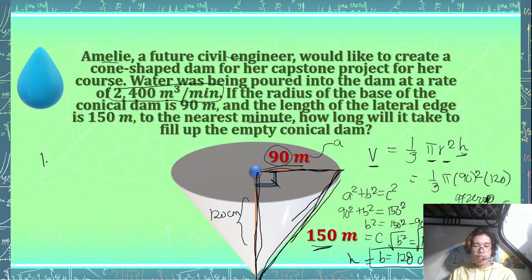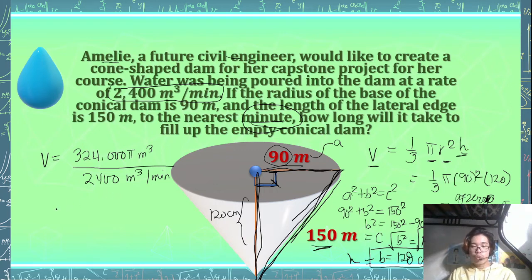So therefore, if the volume of the tank is equal to 324,000 π cubic meters, and it's being filled at a rate of 2,400 cubic meters per minute, so how many minutes? That's the question here. How many minutes or to the nearest minute, how long will it take to fill up the empty conical dam? What we can do...